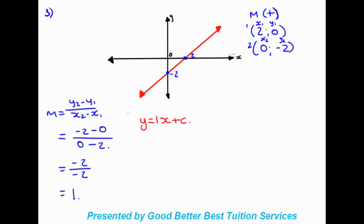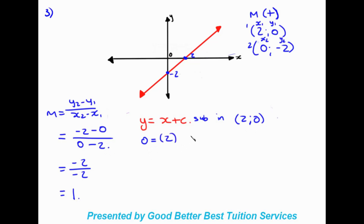We write out our equation with the gradient: y = x + c (we don't need to write the one). Now we substitute in the point (2, 0): y is zero, x is two, so zero = two + c, giving us c = negative two.